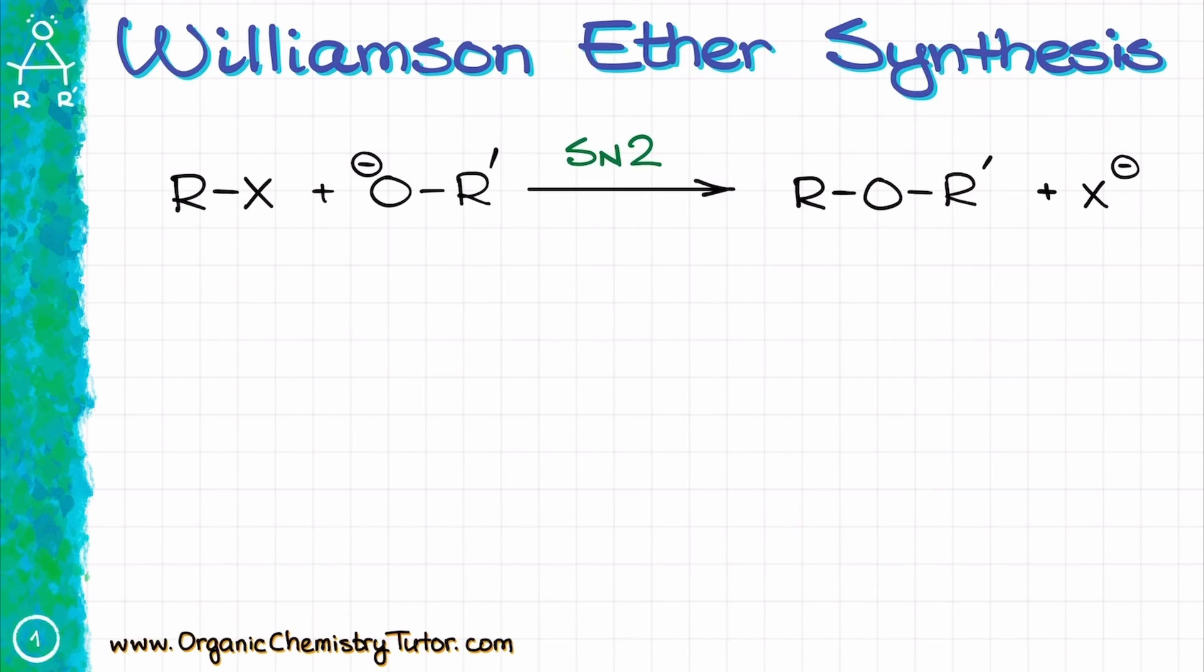The Williamson ether synthesis is essentially a simple SN2 reaction, but despite its simplicity, this reaction can easily trick unprepared students and become a determining factor between a passing and a failing grade on the test.